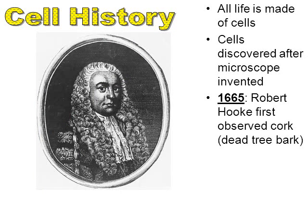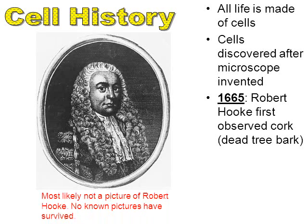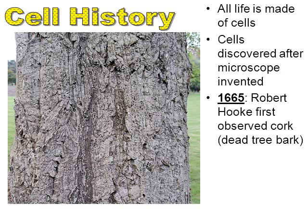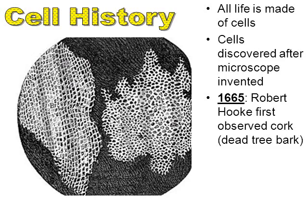Robert Hooke, in 1665, first observed cork, which happened to be dead tree bark. Here's a picture of what perhaps might be Robert Hooke — though we're not even sure, as no known pictures of him have survived. Here we have a picture of some cork, which is basically the bark of a type of oak tree. Pretend he sliced a real thin layer and put it underneath the microscope. Here's the actual drawing that Robert Hooke made back in 1665 — it's a hand-drawn image, and he was very artistic.